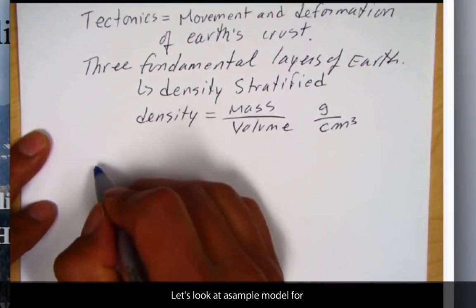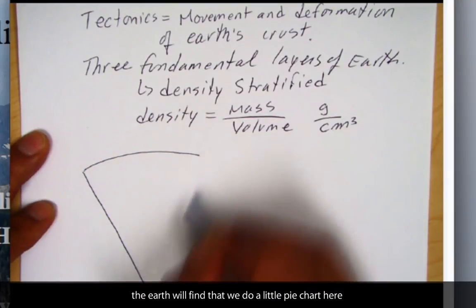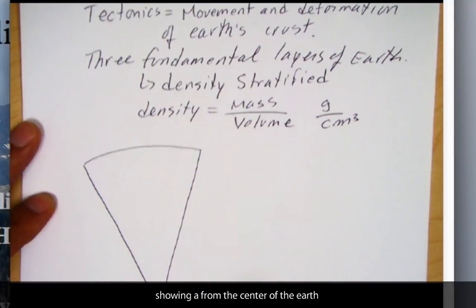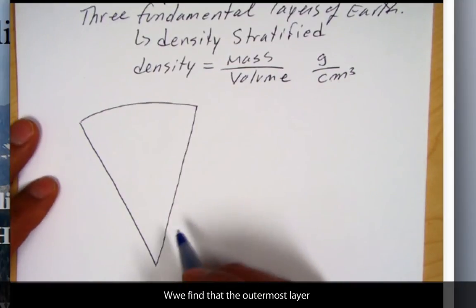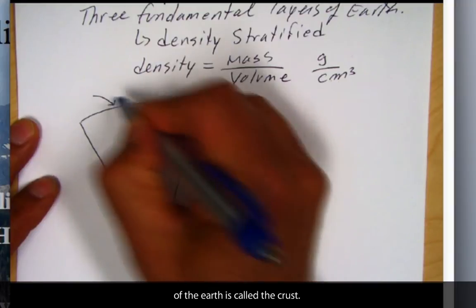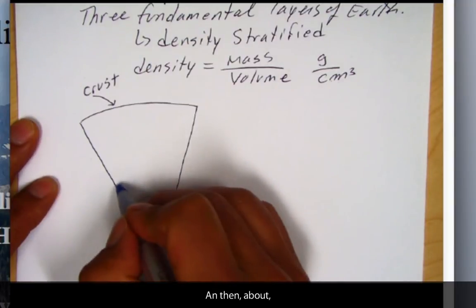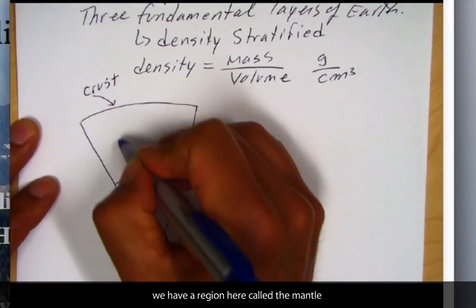Now, if we look at a simple model for the Earth, we'll do a little pie chart here, showing like if we're going from the center of the Earth here to the crust of the Earth, a little wedge through the Earth. We find that the outermost thinnest layer of the Earth is called the crust. And then, about 2,900 kilometers down, we have a region here called the mantle.